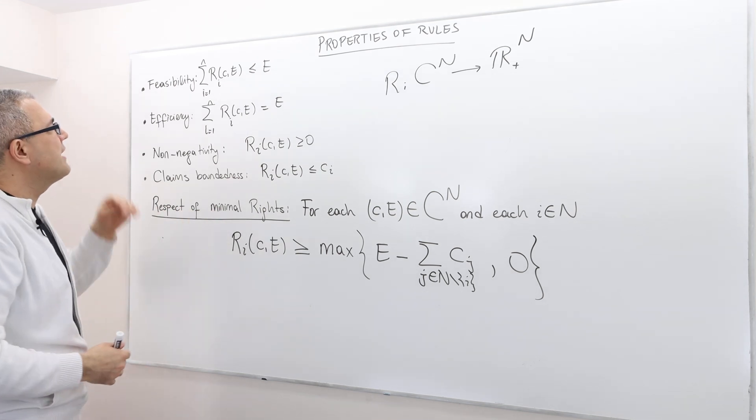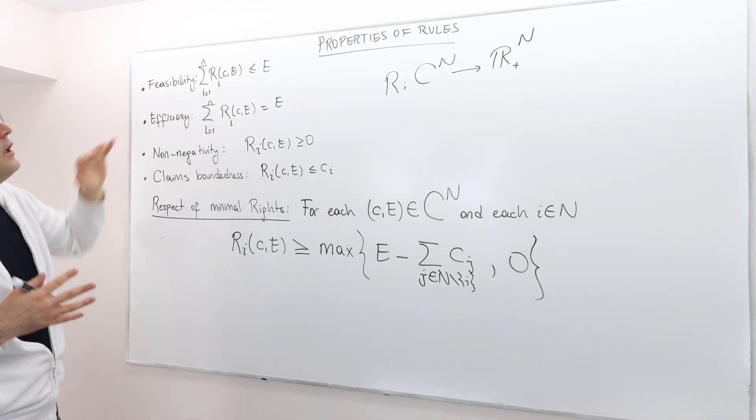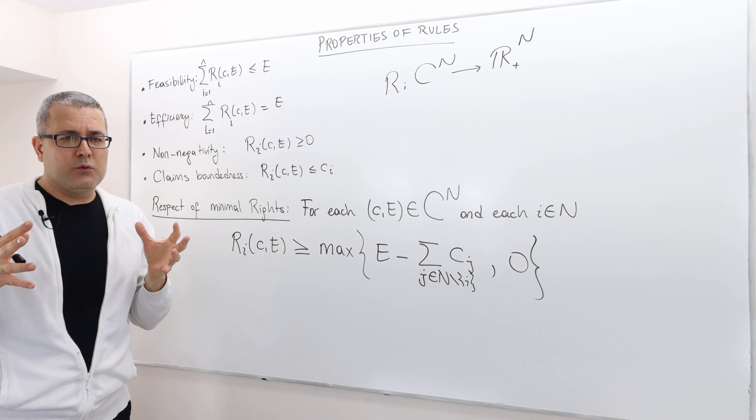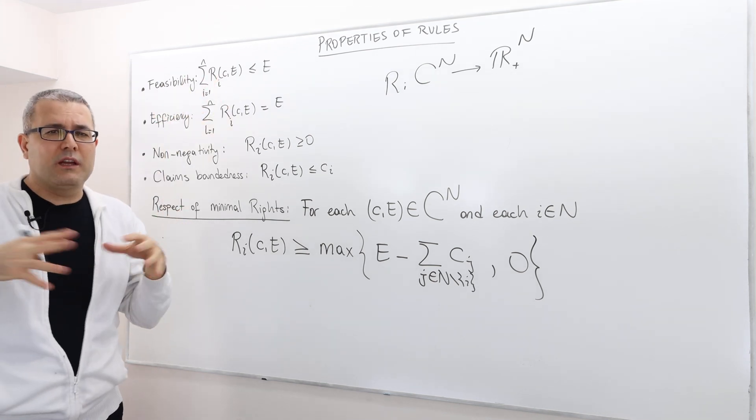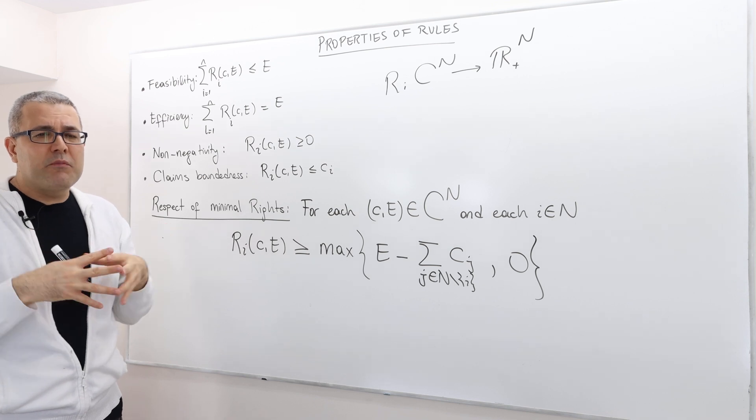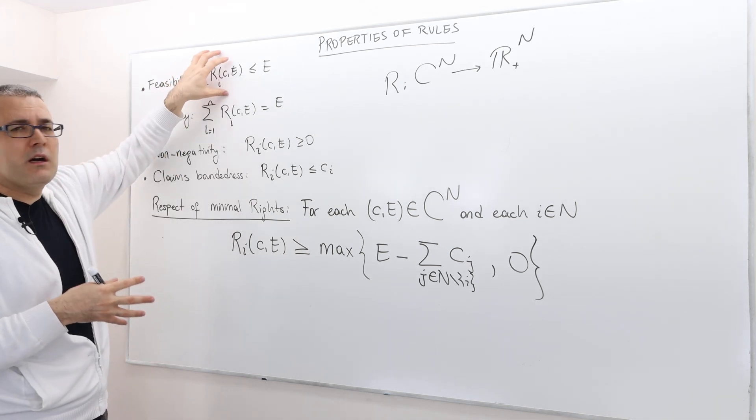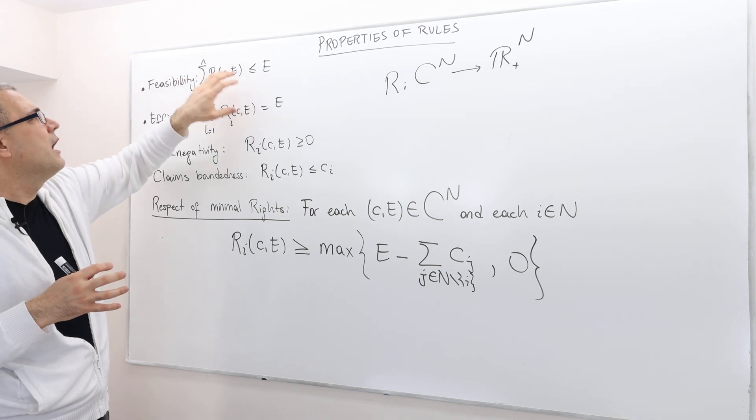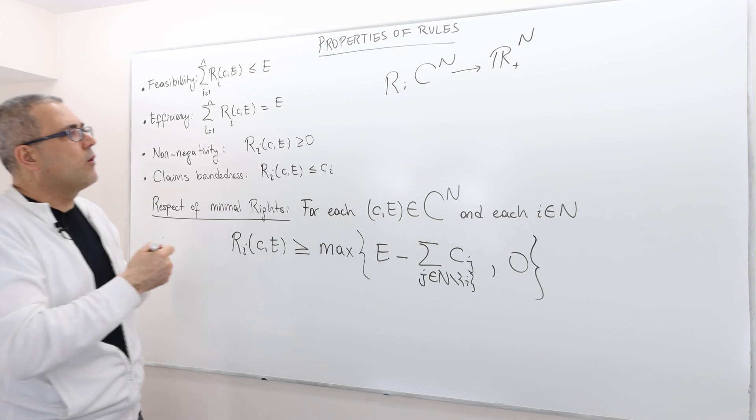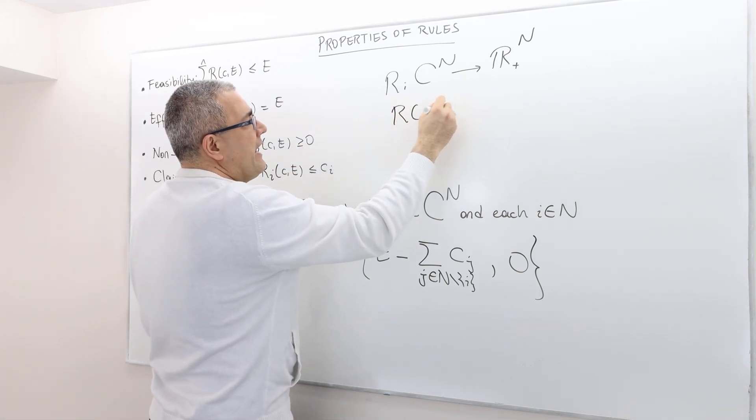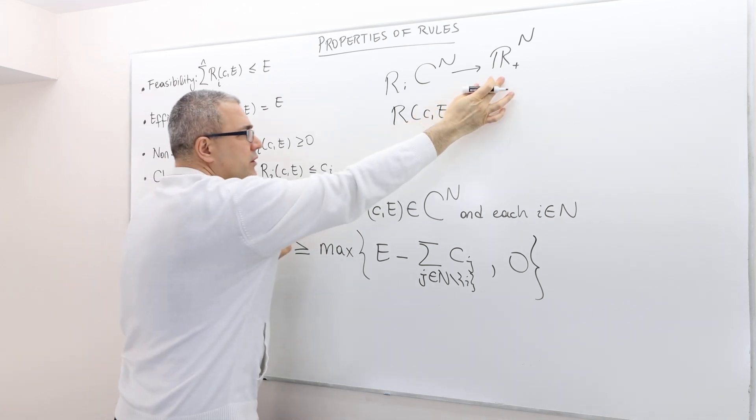So what does that mean? Well, the feasibility means basically you cannot award agents something that is not available. So your sum of the award vector - remember this is R_i(C,E) for any claims problem (C,E) is a vector, an award vector.